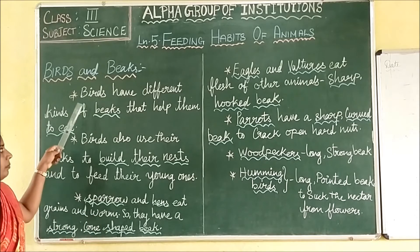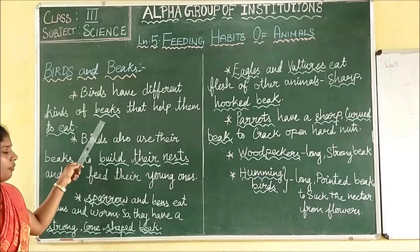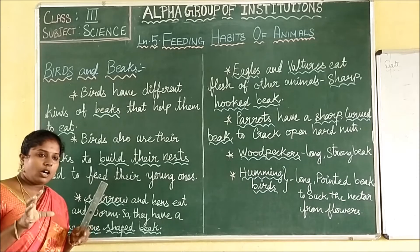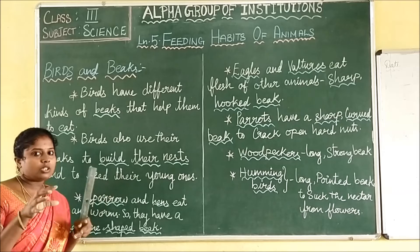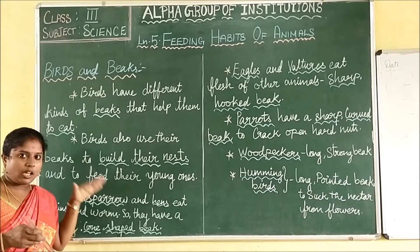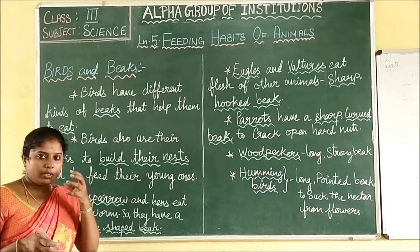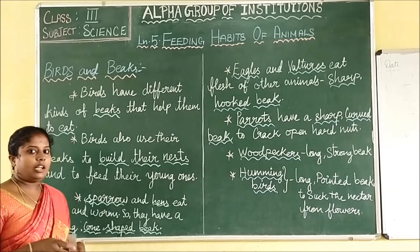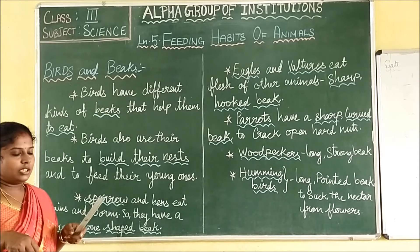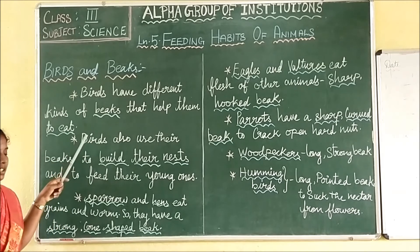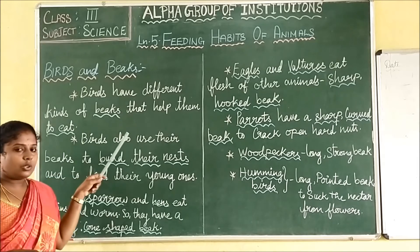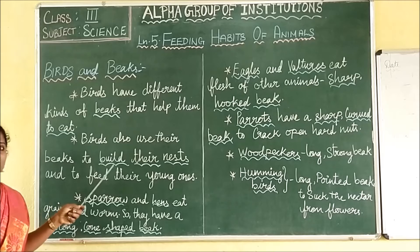So, birds. Birds have different kinds of beaks that help them to eat. Birds will eat according to their beak. And what will they use the beak for? Birds have different kinds of beaks. Mainly it helps them to eat. And then birds also use their beak to build their nest.